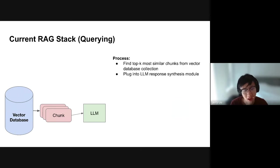Now that we've walked through the basic RAG stack, let's think about more challenging use cases. In the next sections, we'll go through examples where the current RAG stack cannot handle certain types of questions — returning an incomplete or incorrect answer. One of these is multi-document comparisons: how do we ask more complex questions over multiple documents? The existing stack allows you to ask questions over specific facts within a single document, but synthesizing information from two different documents becomes more challenging.